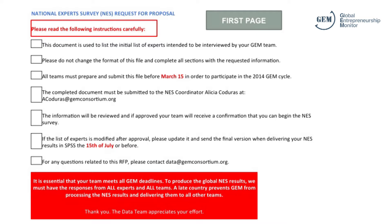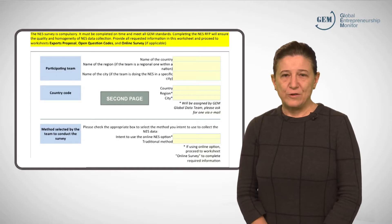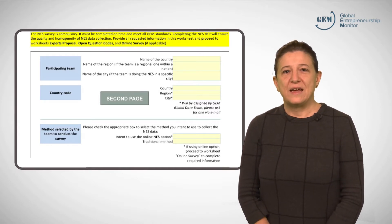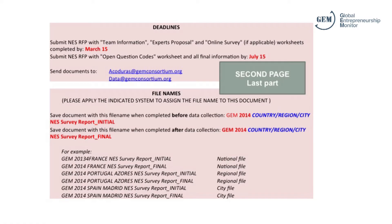The first page is basic instructions, which you should read carefully. On the next page, you should fill out the name of your country, region or city, your country code — usually provided by the data team — and how you will be interviewing experts: online or face-to-face. You are encouraged to use the online method, as this is much more efficient. You should only use the face-to-face option if absolutely necessary. The second part of page 2 gives information about the submission deadline, where you should send it to, and the file name format.